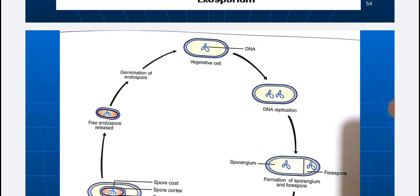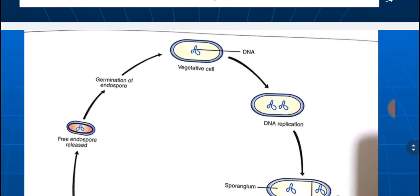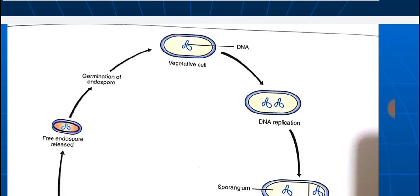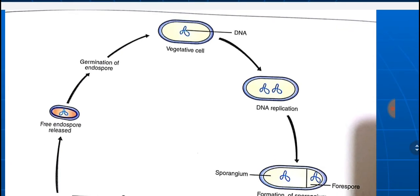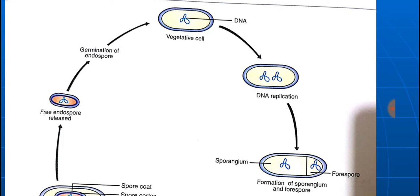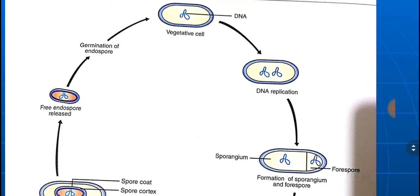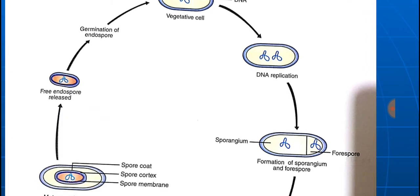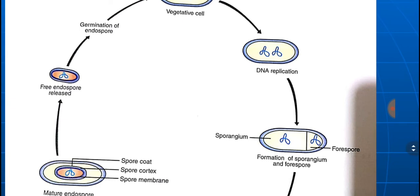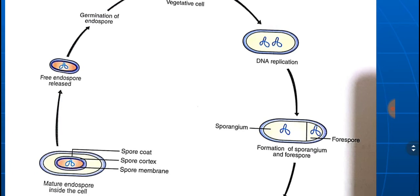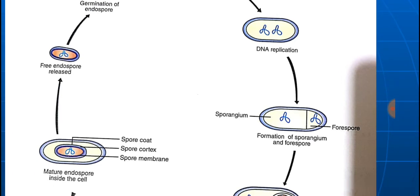This cycle shows how the spore replicates. A vegetative cell contains DNA, which is replicated into two DNA molecules. Then a septum is formed, and this septum grows and divides the cell into two compartments — one is termed the forespore and one is termed the sporangium.